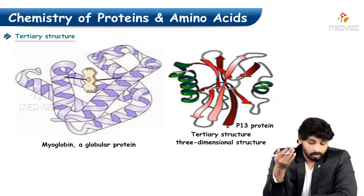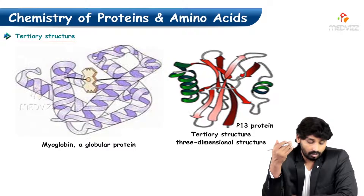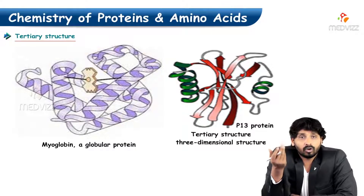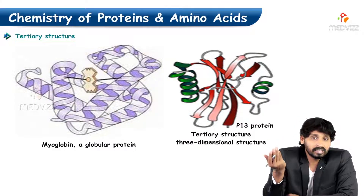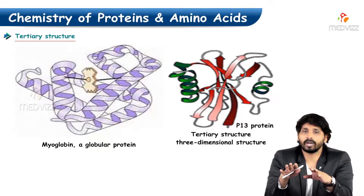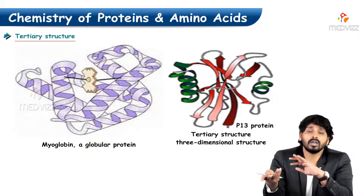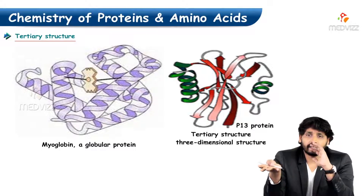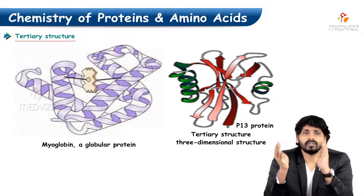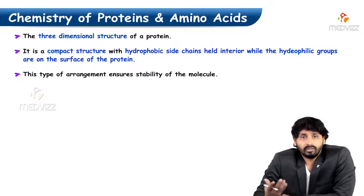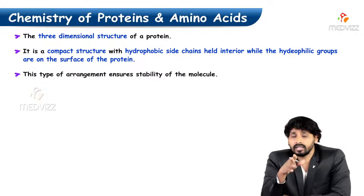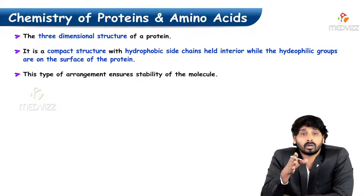Coming to the tertiary structure, the best example I can give is myoglobin, which is a globular protein. Myoglobin is a muscular protein which stores in muscles. Though it is a single polypeptide, it folds several times in 3-directional folding, giving a complete 3D picture. The 3-dimensional structure of myoglobin is a compact structure with hydrophobic side chains held inside. This is the beauty of the tertiary structure.